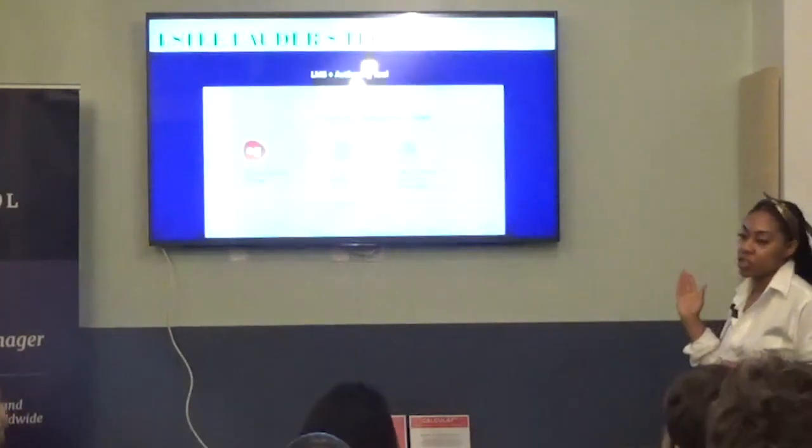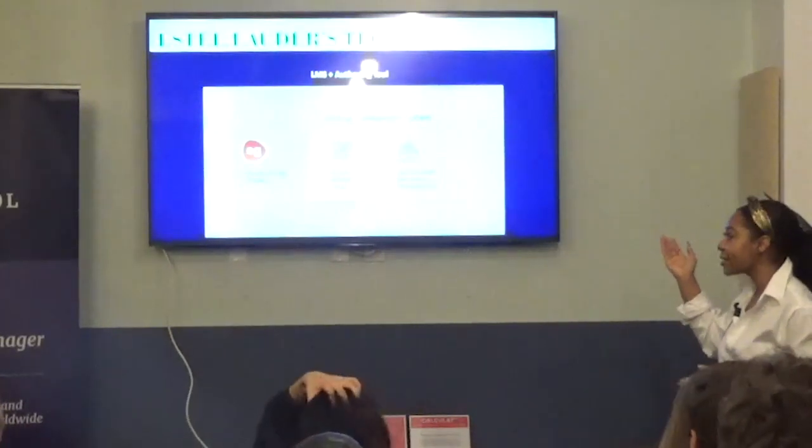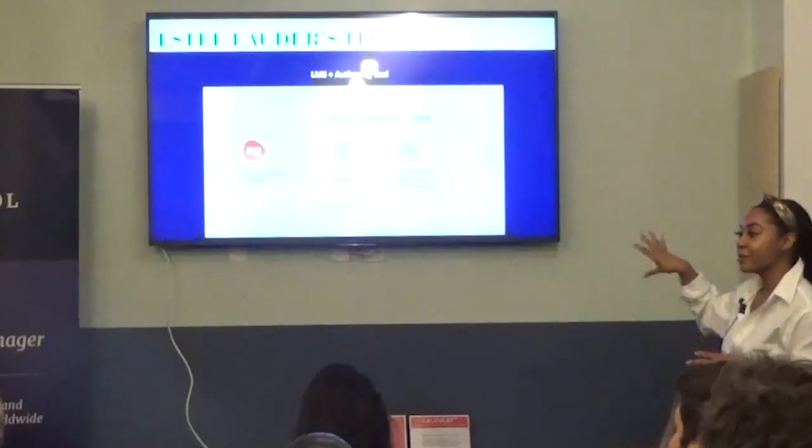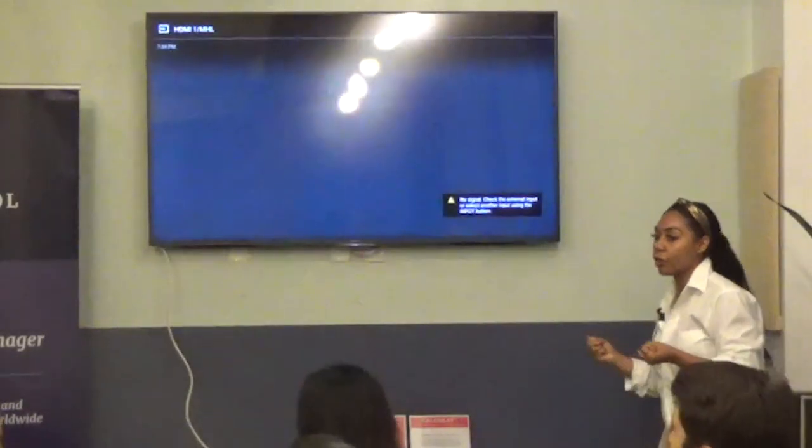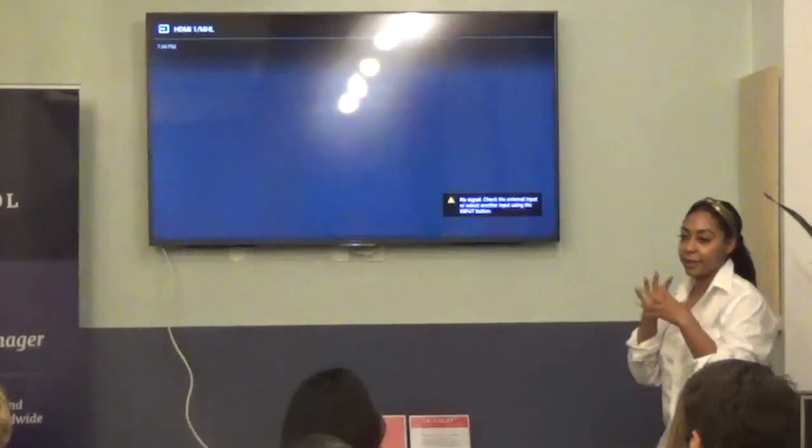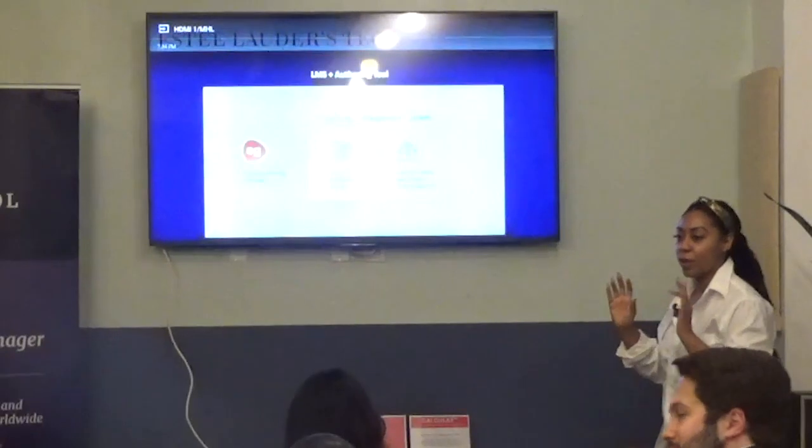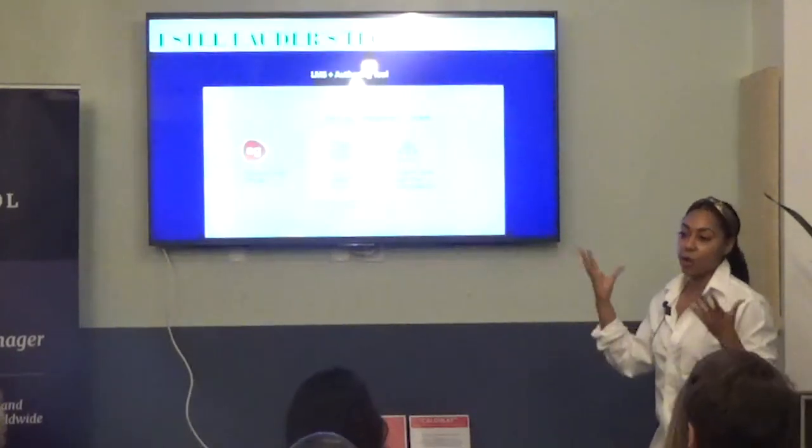This is essentially how the tech behind our LMS and how we use our authoring tool. So it's super technical, but we have to pull the information from the authoring tool to Articulate Rise, and it would come in something called a SCORM format, essentially, and then we have to put that into our LMS, upload it, and then that's how it would appear.